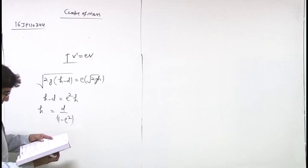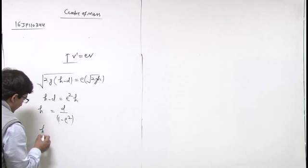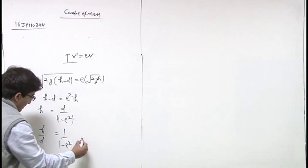So this is the answer: H over D equals 1 over (1 minus E-squared). This option is correct.